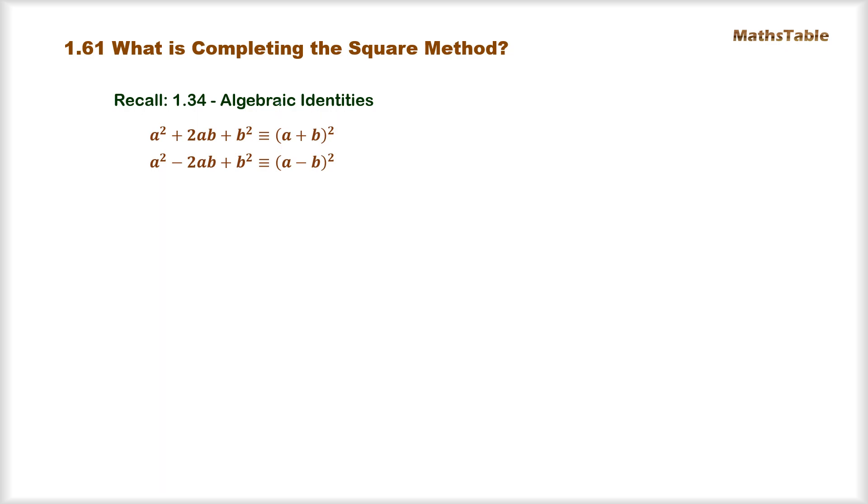What we discussed there was that the right side of each of these identities was called factorized form. Now these factorized forms also have a second name of completed square forms. This is because the expressions on the right side are both written in the form of a perfect square of either the sum or difference of two things. Now why do we need to study these forms in detail?